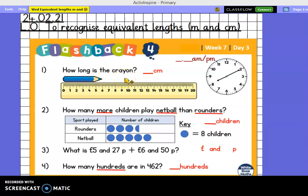Number 1. How long is the crayon? And that's in centimetres. Number 2. How many more children played netball than rounders? Remember to look at the key. Each full circle represents 8 children. Number 3. What is £5.27 add £6.50? Number 4. How many hundreds are there in 462? And then write down the time on the clock. Pause while you have a go.